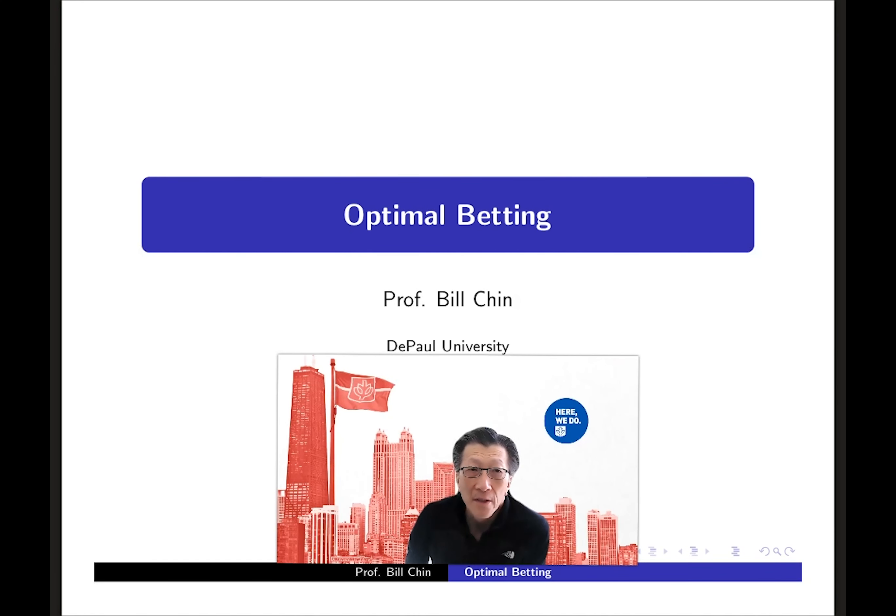This is Professor Bill Chen in the math department. I'm mostly a pure mathematician who recently got led into applied probability via my interest in card games such as blackjack and poker. Along the way I taught classes on the mathematics of games of chance and gambling, and I've done some research on the theory of optimal betting which I'll tell you about in this video.